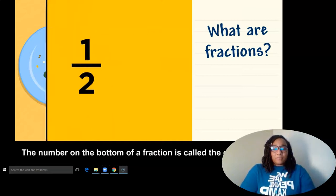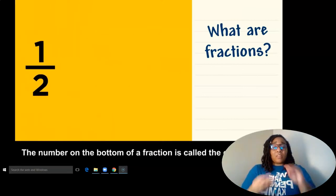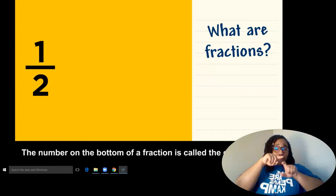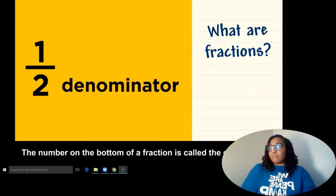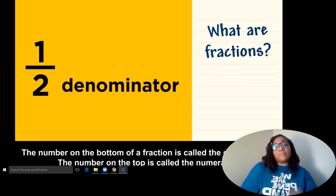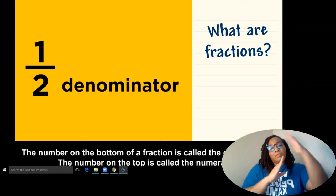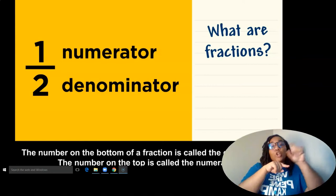The number on the bottom of a fraction is called the denominator. The number on the top is called the numerator.